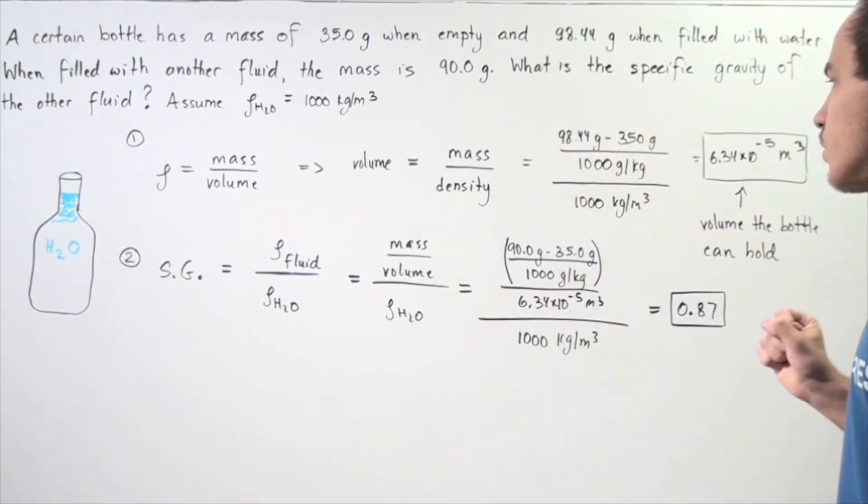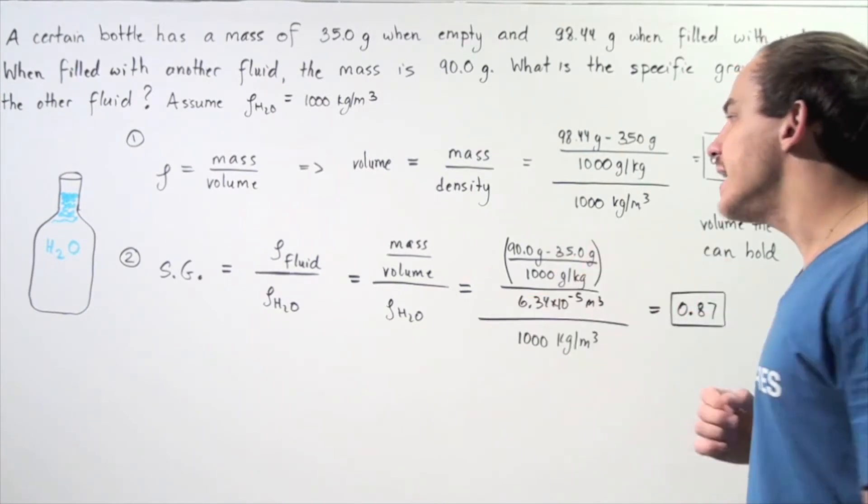So, take this mass in kilograms and divide it by the density of water and we get approximately 6.34 times 10 to the negative 5 meters cubed is the volume that the bottle can hold. Now, in the second step,